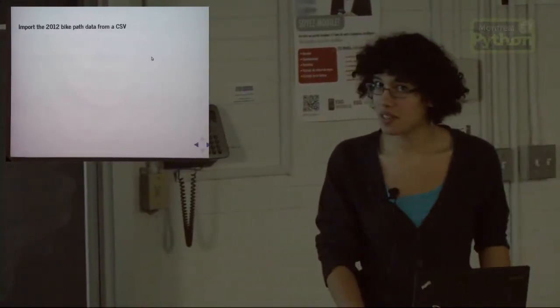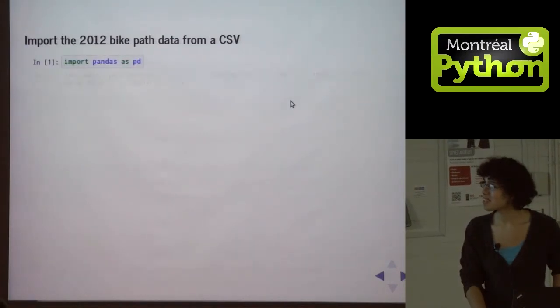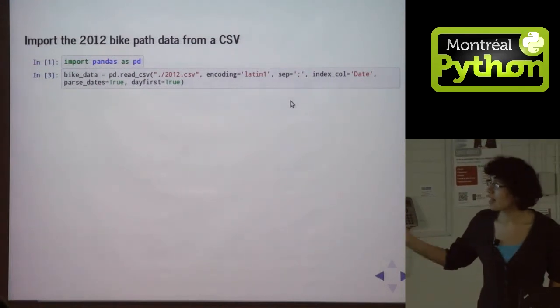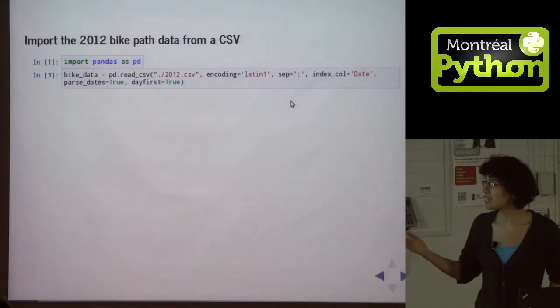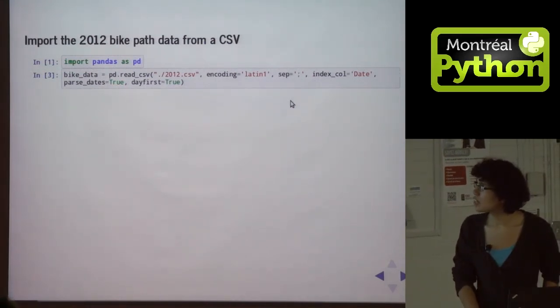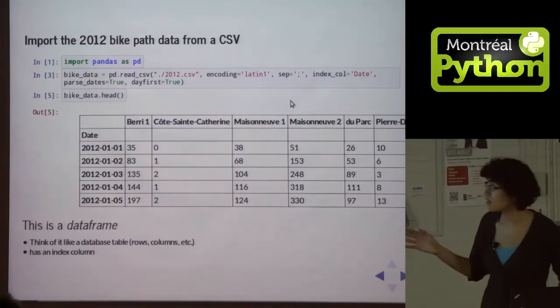So the first thing to do is import the data from a CSV. So we can use this function called read_csv. I got this data from the Montreal Open Data website. So we tell it the encoding, the separator, and we get an object called a data frame.